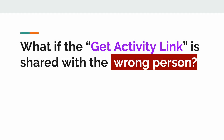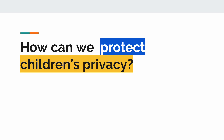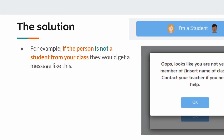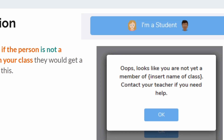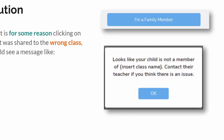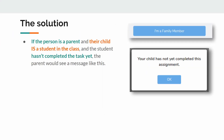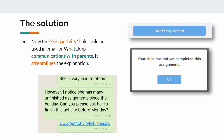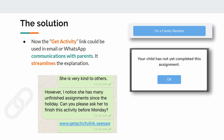However, what if the Get Activity link is shared with the wrong person? How can we protect children's privacy? If the person is not a student from your class, they would get a message like: 'Oops, looks like you're not yet a member of [class name]. Contact your teacher if you need help.' What if a parent clicks a link shared to the wrong class? They would see: 'Looks like your child is not a member of [class name]. Contact their teacher if you think there is an issue.' If the parent's child is in the class but hasn't completed the task yet, the parent would see: 'Your child has not yet completed this assignment.' Imagine using this link in an email or WhatsApp message to parents — this really streamlines the whole explanation.